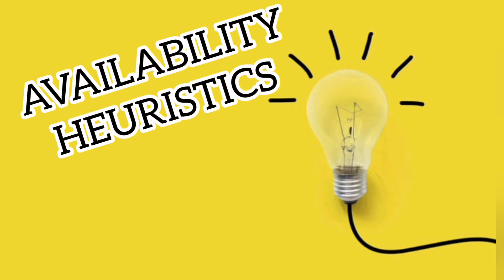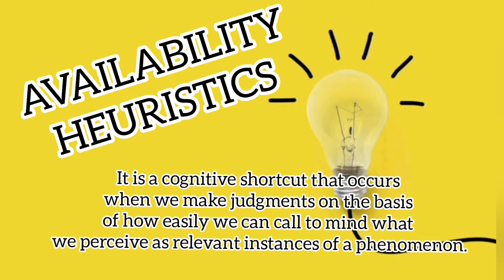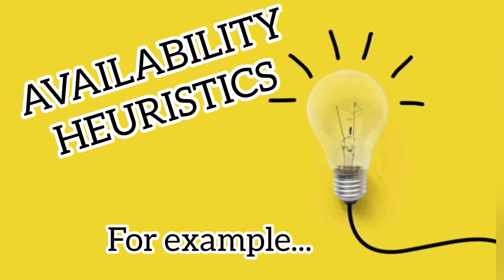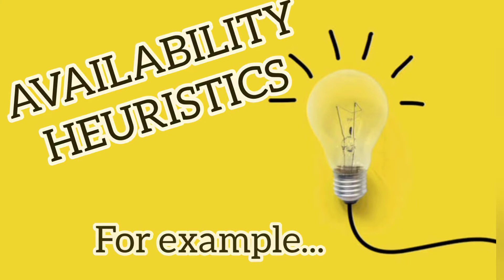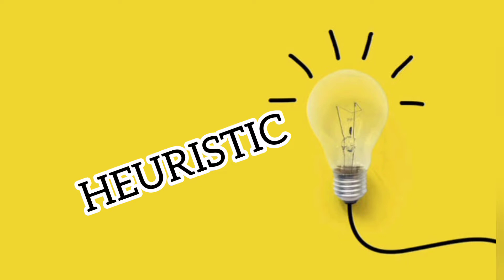We have availability heuristics — a cognitive shortcut that occurs when we make judgments. For example, if we are repetitively exposed to an advertisement of the Apple company regarding their product iPhone, we tend to familiarize all the information. When you go to the mall to buy a phone, that available information will pop into your mind. In general, heuristics are the mental shortcuts we use, also known as a rule of thumb.